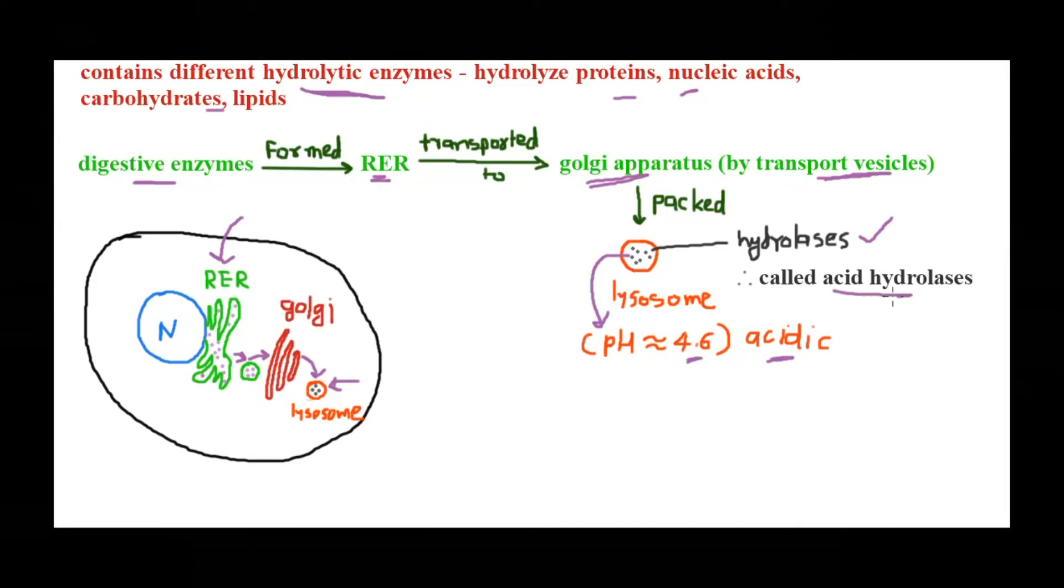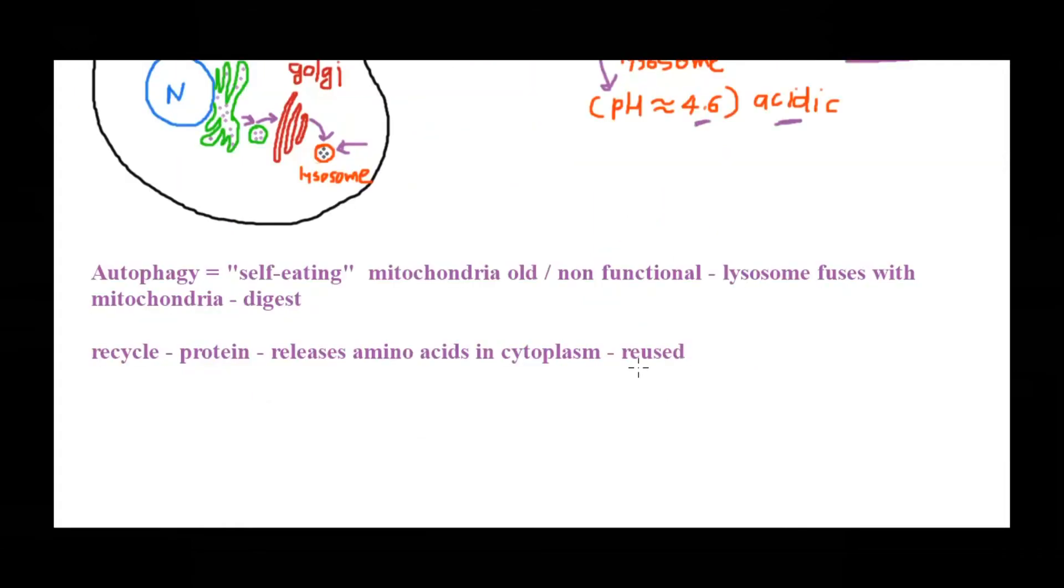Now why do we need such bags of digestive enzymes floating around in the cytoplasm? What are the functions of lysosomes? We can break down the functions of lysosomes into two broad categories. One is autophagy. The term itself says autophagy means self-eating. Why does a cell need self-eating? That's like suicidal. This is the phenomenon occurring for any old organelle or any non-functional organelle in the cell.